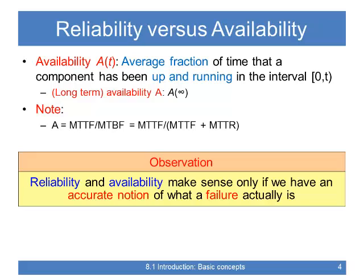The mean time to repair is how long it will take to get the component up again. The mean time between failures is exactly the sum of those two. You can apply this to software, but it's more common to relate it to hardware. Availability is the average fraction of time that a component has been up and running in a specific interval.